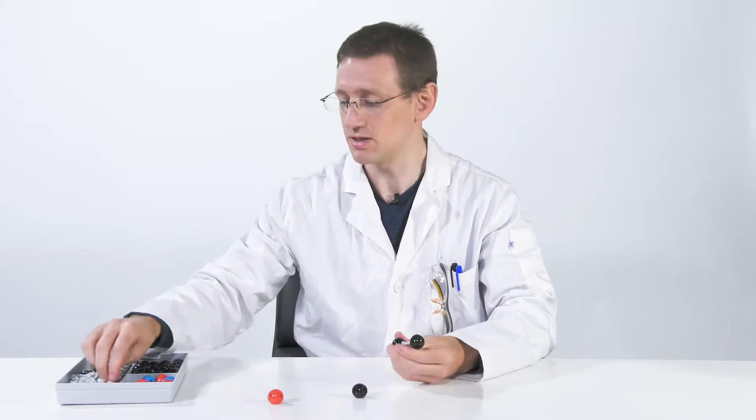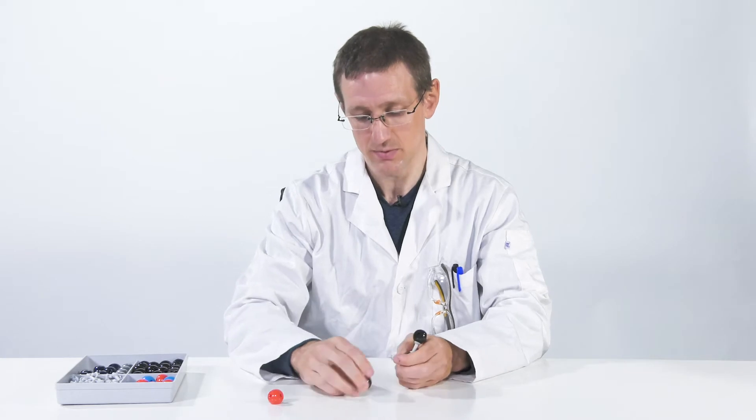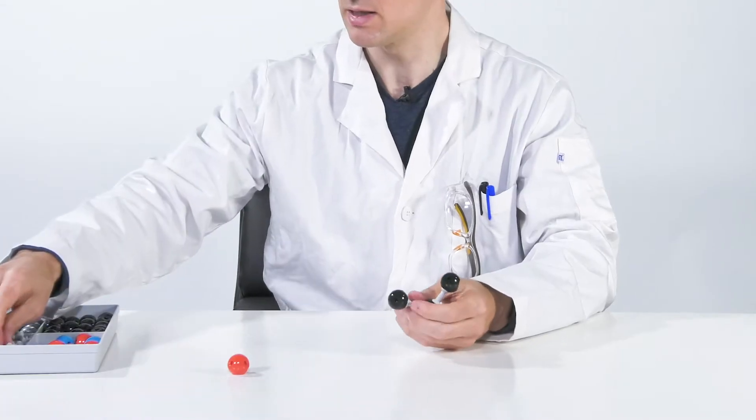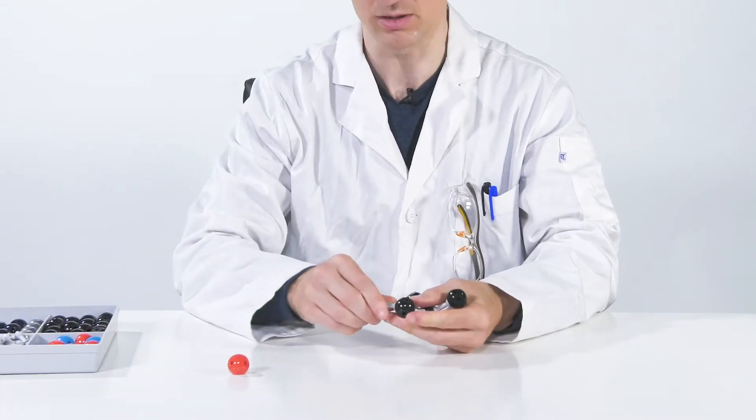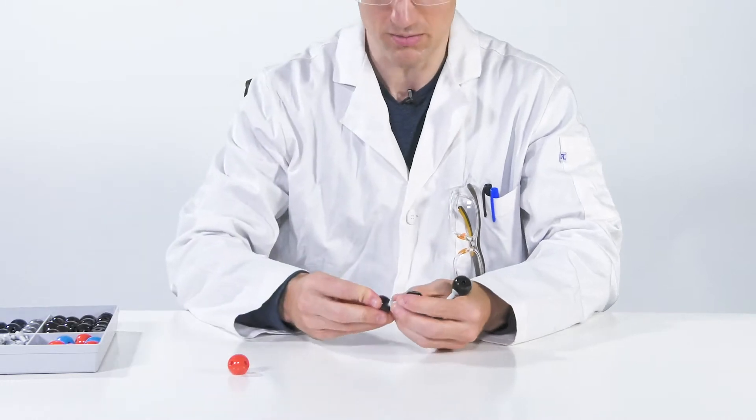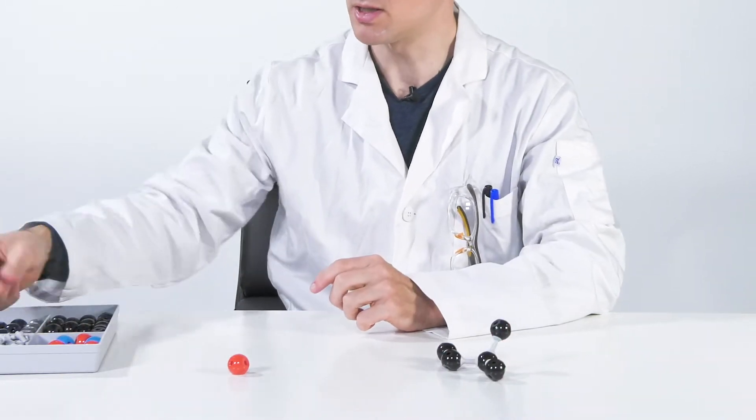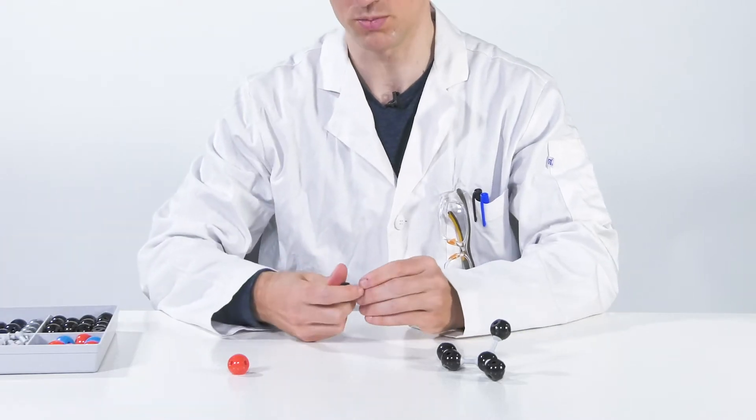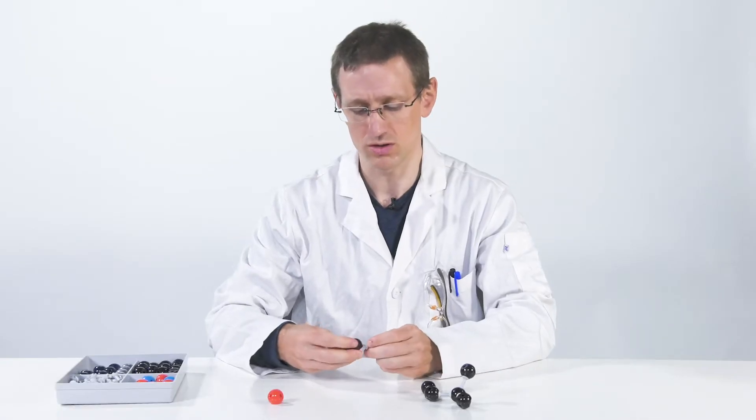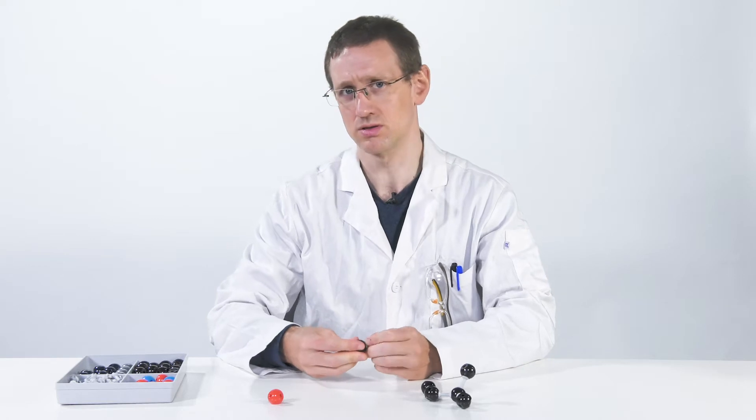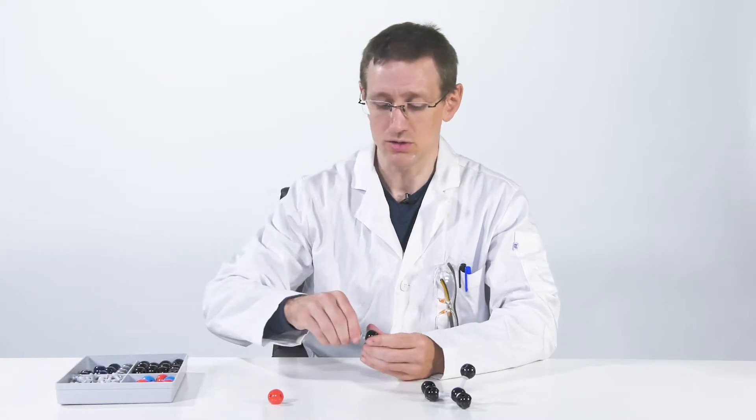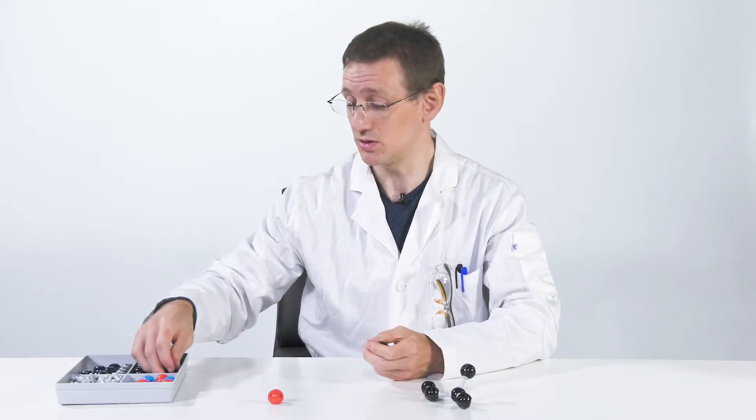So let me start building THC, and for that I think in building blocks. So I built my first building block, which is an isoprene, which is the starting point for all terpenes. So you might wonder terpenes, we're building THC. And terpenes are also present in cannabis, that's what gives you the flavor.